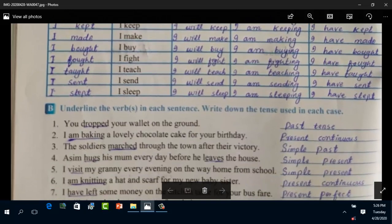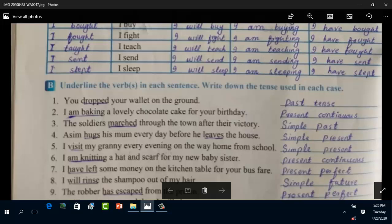Coming to question number B: underline the verbs in each sentence, write down the tense used in each case. You dropped your wallet on the ground - 'dropped' is actually second form of the verb, so it is past tense. I am baking a lovely chocolate cake for your birthday - 'I am baking,' the process is still going on, so it is present continuous. The soldiers marched through the town after their victory - 'marched' means second form of the verb is used, simple past. Asim hugs his mom every day before he leaves the house - 'hugs' or 'leaves,' simple present.